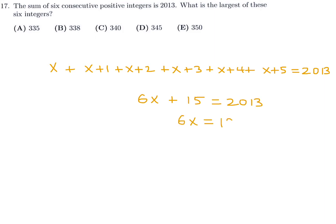6X, therefore, is 1998. And then X is 1998 divided by 6, which is 333. They want the largest. The largest of those 6 was this guy, X plus 5. So X plus 5 is 338. So number 17, the answer is B.